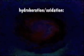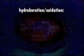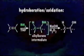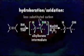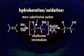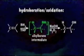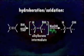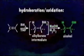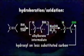Basic chemical reaction: an alkene in the presence of BH₃ forms an alkyl borane intermediate with boron on the less substituted carbon and hydrogen on the more substituted carbon. This alkyl borane intermediate is treated with hydrogen peroxide in a base to form an alcohol with the hydroxyl on the less substituted carbon.